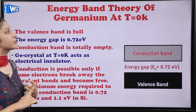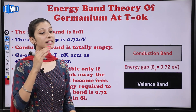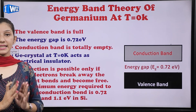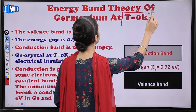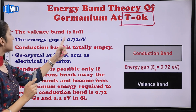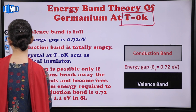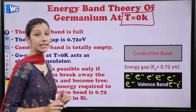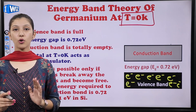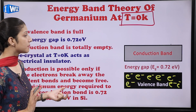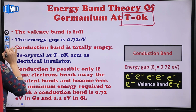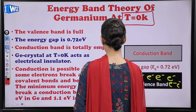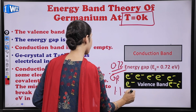Energy band theory of germanium at T = 0 Kelvin: at this temperature the valence band is completely full and the conduction band is completely empty. The energy gap is 0.72 eV in case of germanium and 1.1 eV in case of silicon.